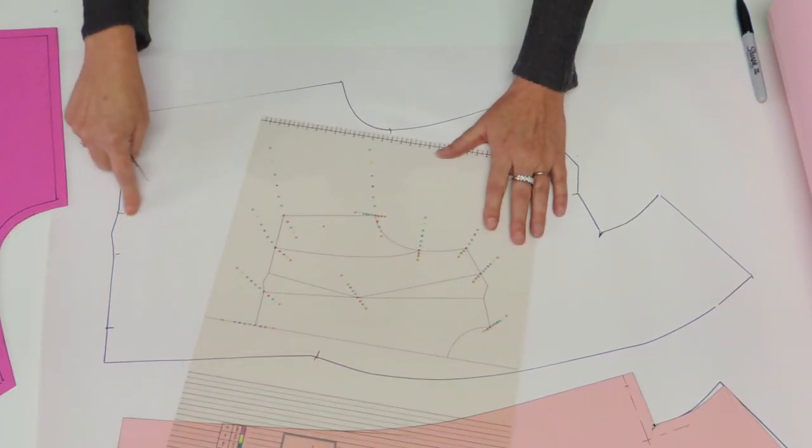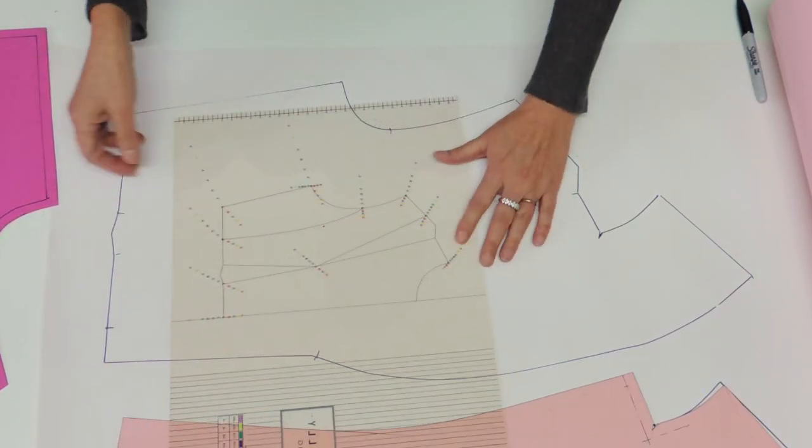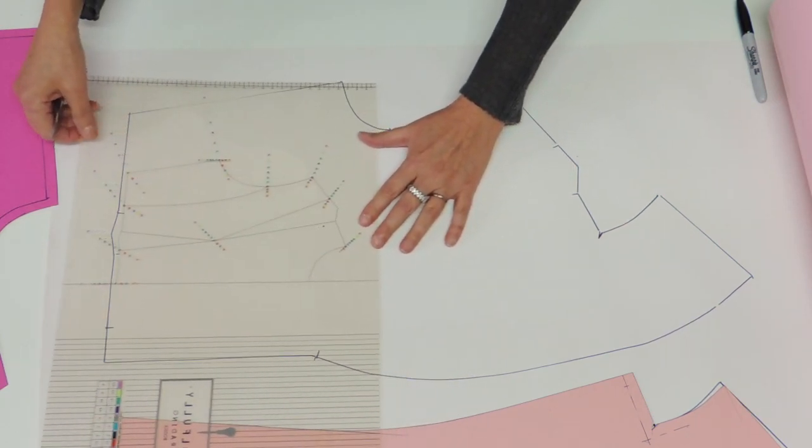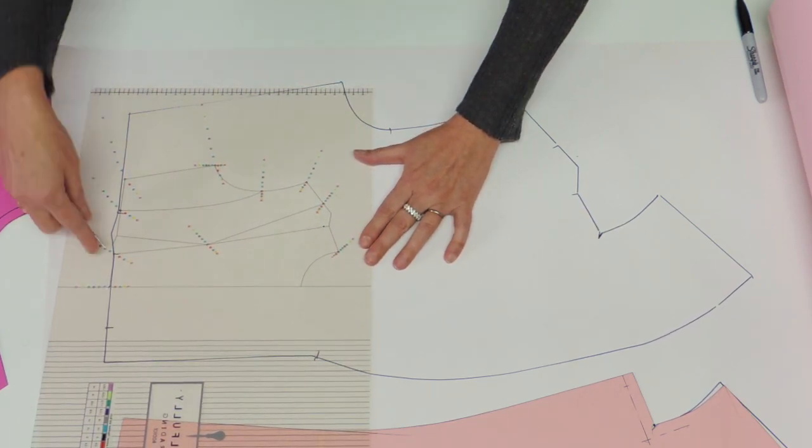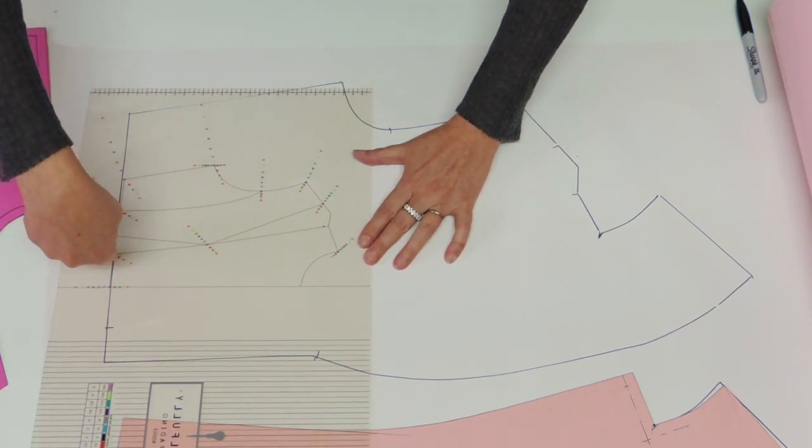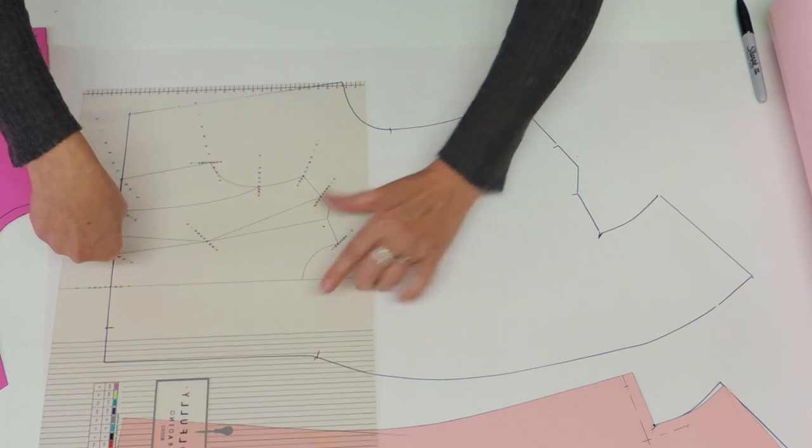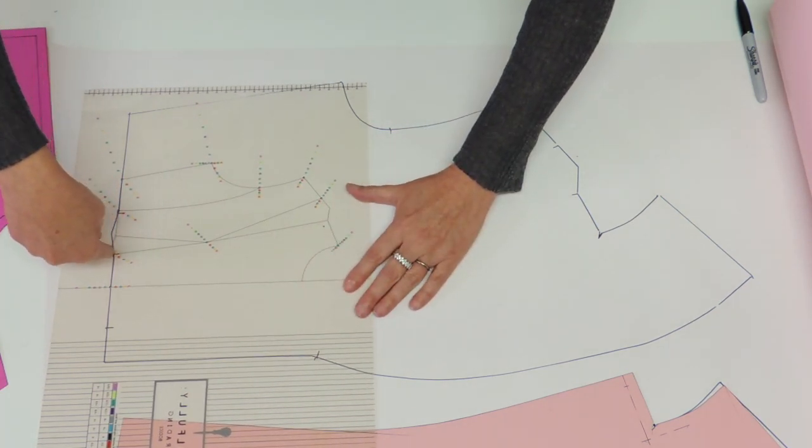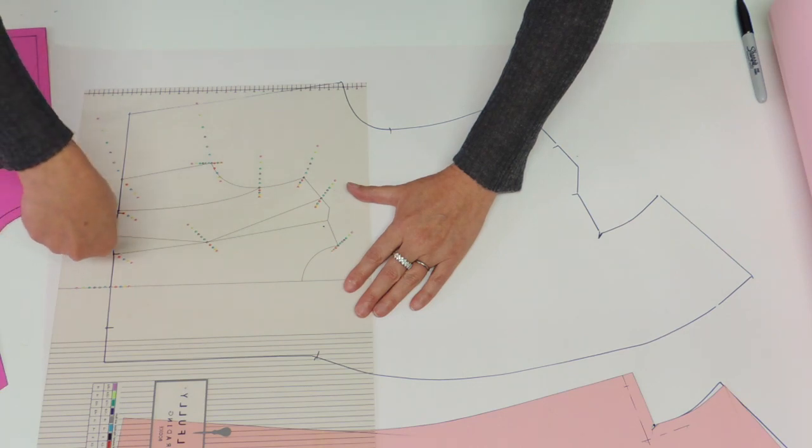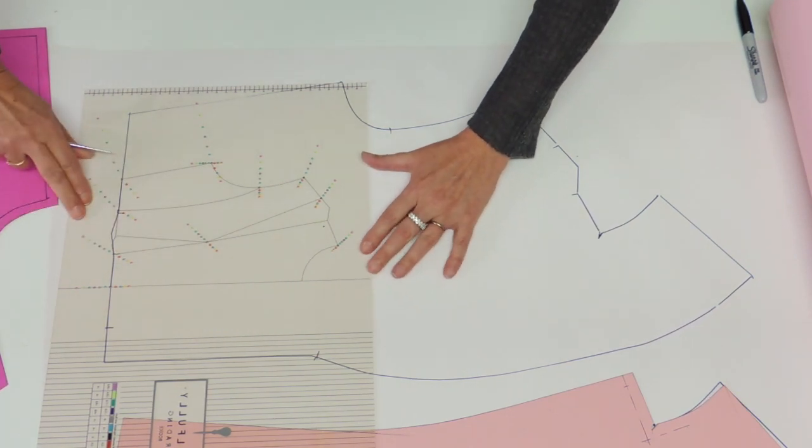Now in that case I do have the waist dart, so I'm going to do the same thing twice using the grading of the dart at the waist. Place it right at the point with the black one and keep your tool parallel to the grain line of the bodice. Point out the size that you want, so two sizes bigger, and I repeat.